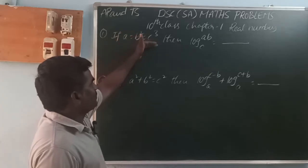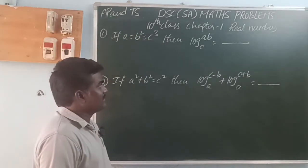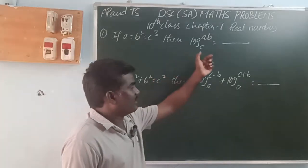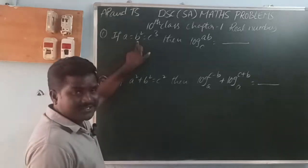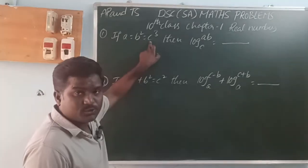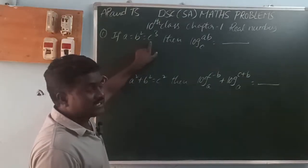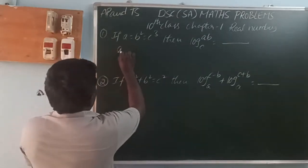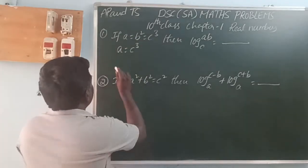Okay, so if a is equal to b squared c, and c cubed equals c cubed, then we need to find log(ab) base c. Here a is equal to b squared, and a is equal to c cubed. So b squared equals c cubed.